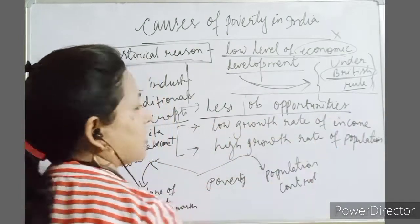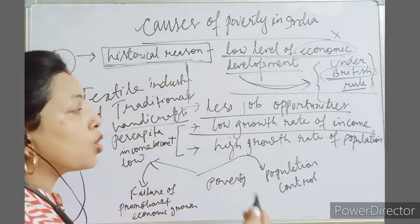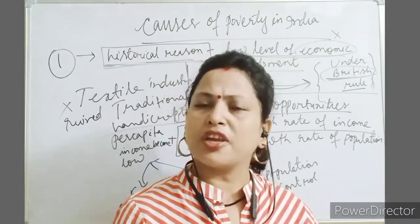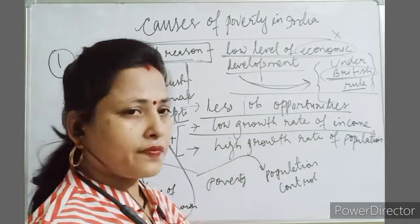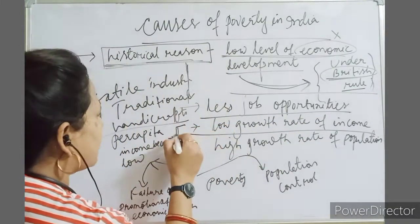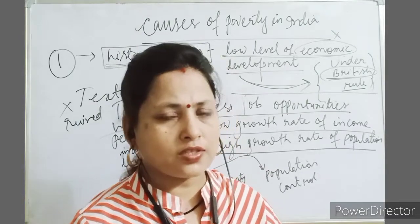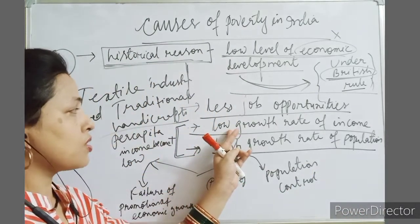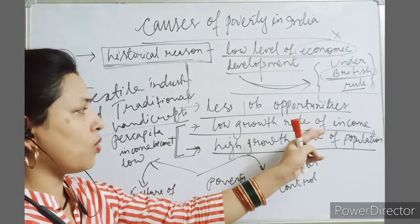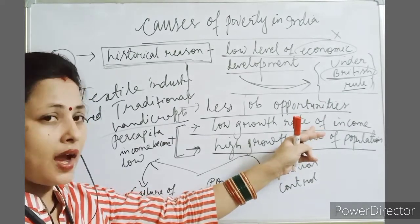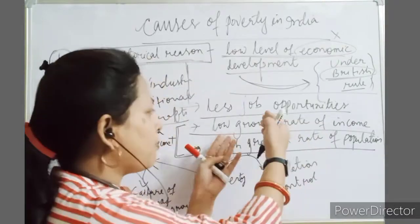As a result, there were fewer job opportunities. With no jobs, income also fell — there was a low growth rate of income. This was accompanied by a high growth rate of population. More job opportunities were absent, rate of income was very low, and population was constantly growing.